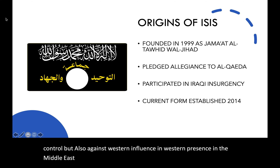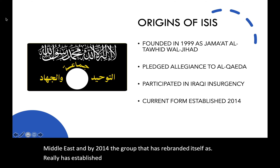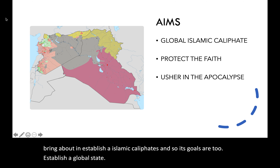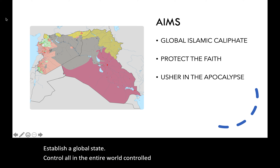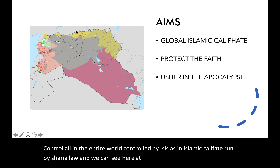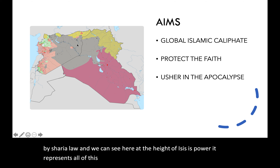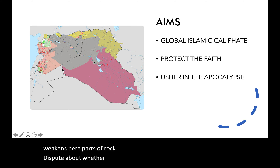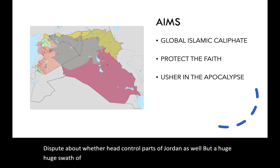By 2014, the group rebranded itself as ISIS and established its political goals, making an attempt to bring about and establish an Islamic caliphate. Its goals are to establish a global state — the entire world controlled by ISIS as an Islamic caliphate run by Sharia law. At the height of ISIS's power, it controlled a massive swath of gray territory by 2015, including parts of Syria and parts of Iraq, with disputes about whether it also controlled parts of Jordan.